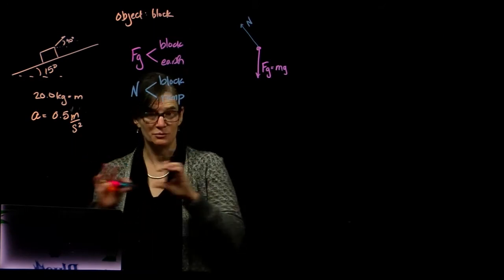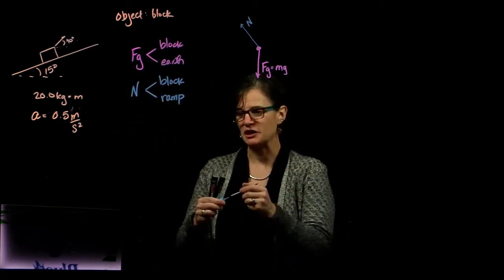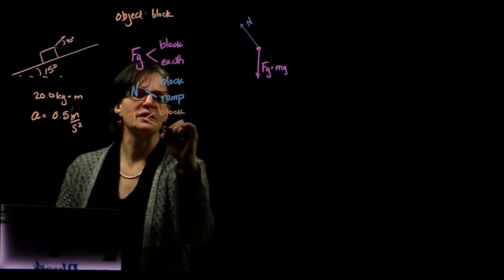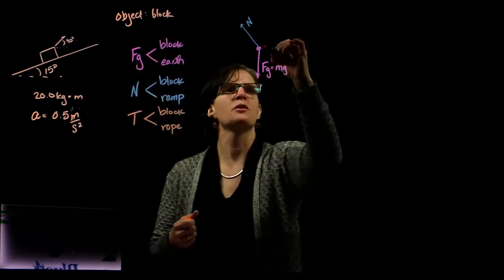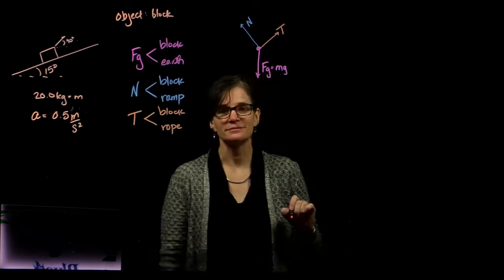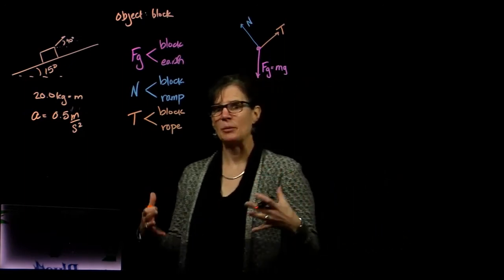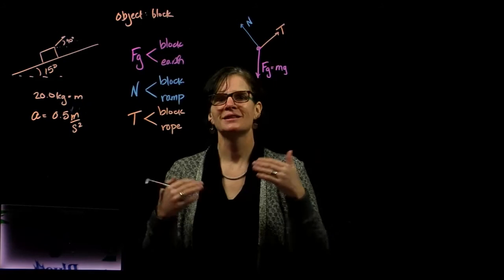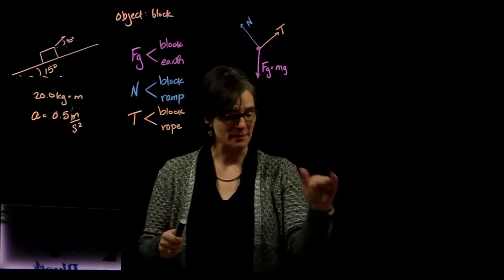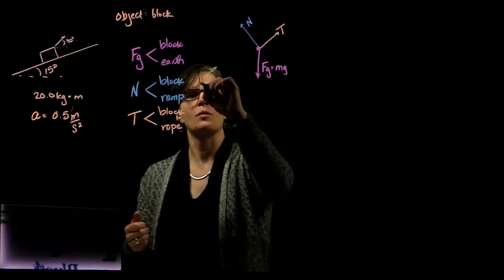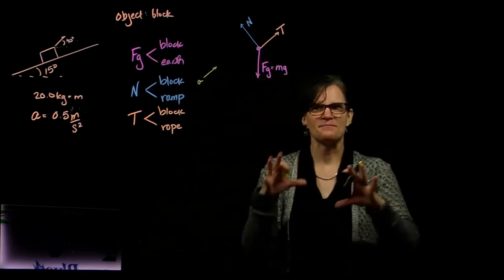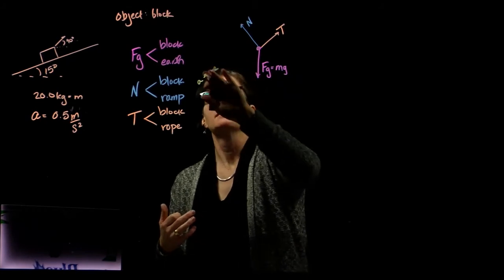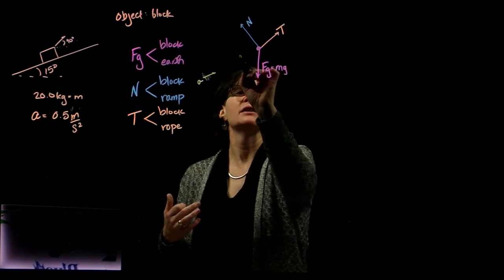The ramp is frictionless, so we don't have friction. We do have that rope, the force of the rope, typically called a tension. That's between the block and the rope, at 40 degrees with respect to the horizontal. Now we have to assess the idea of does it help us to rotate the axes? The acceleration is along the ramp, so we're going to want to identify that acceleration away from the free body diagram. We don't want to think of it as a force.